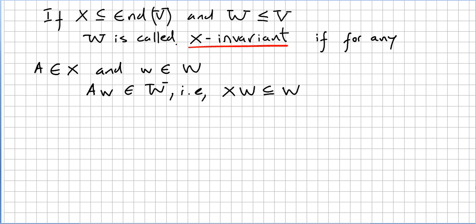W is called X-invariant if for any A in X and w in W, we have Aw in W. That is, A is in the set X of endomorphisms, and A times the element w is in the subspace W. That means X times W is contained in W.